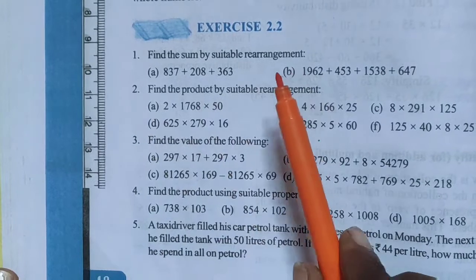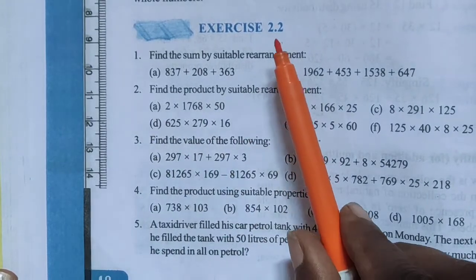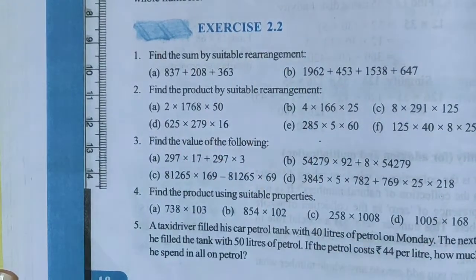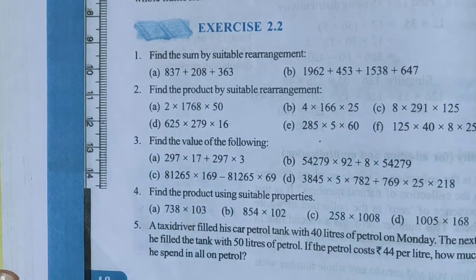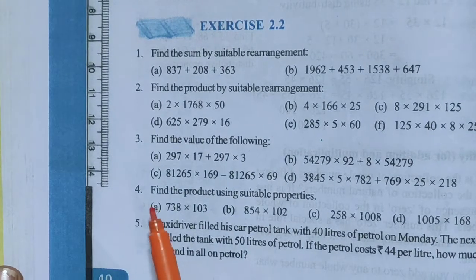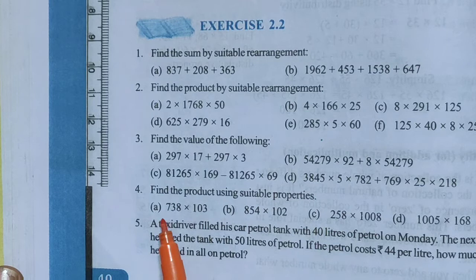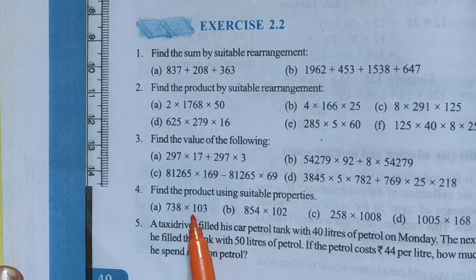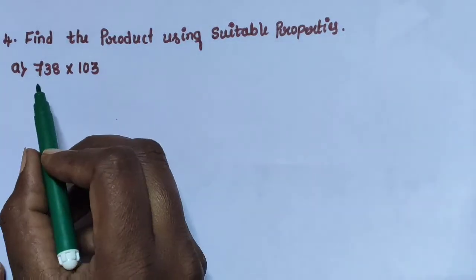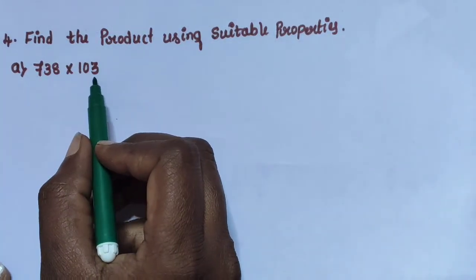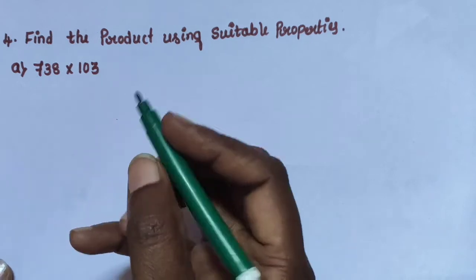Hi children, let us continue the exercise 2.2, chapter 2 whole numbers, question number 4: Find the product using suitable properties. Sub-question A: 738 into 103.